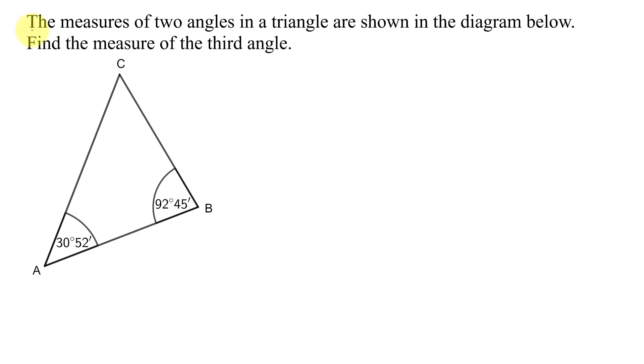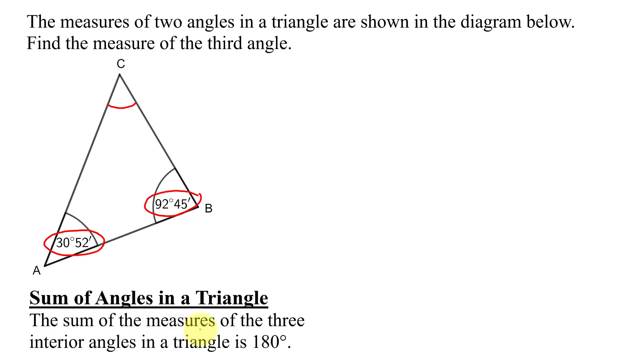In this example, the measures of two angles in a triangle are shown in the diagram below. Here's my triangle. I'm given the measure of angle A and angle B. I need to find the measure of the third angle, that's angle C, up here. Quickly reviewing, the sum of the measures of the three interior angles in a triangle is 180 degrees.